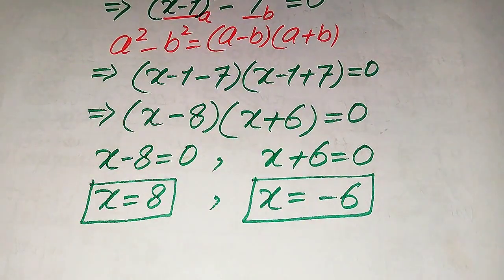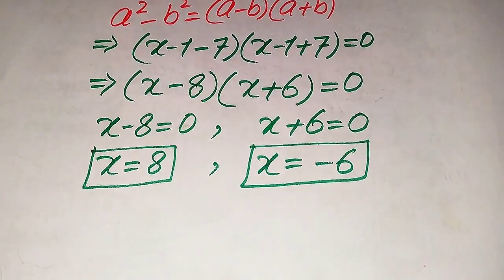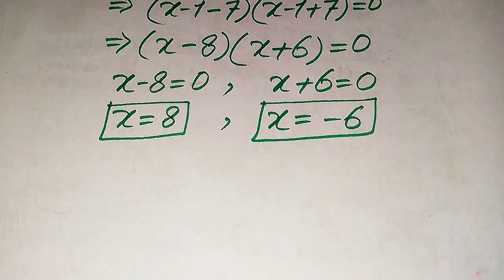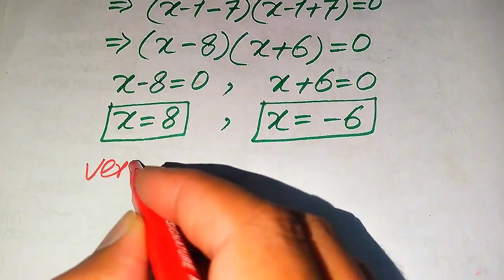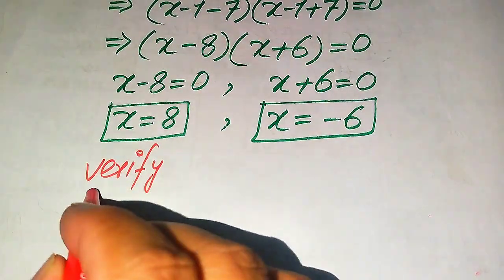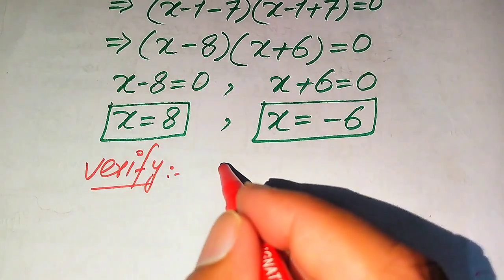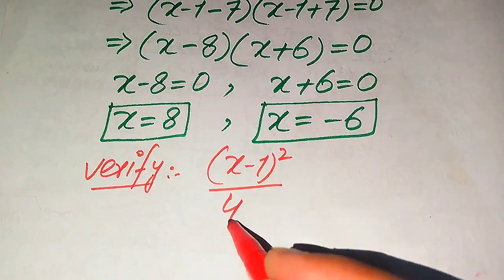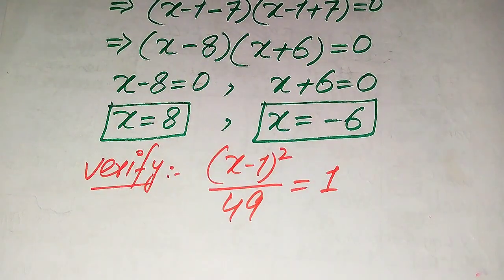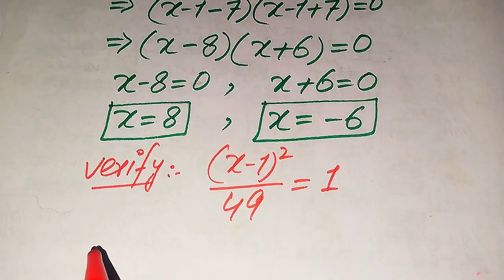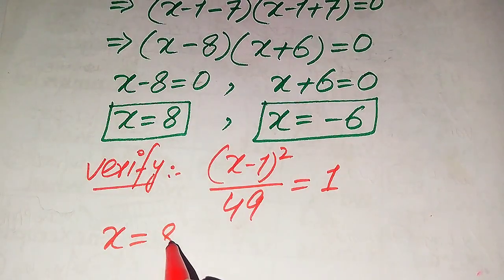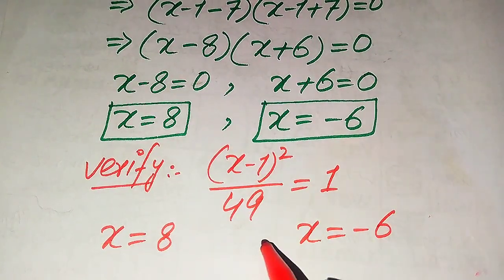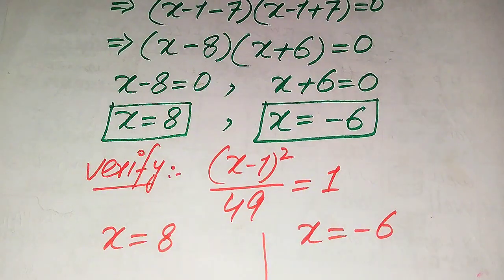These are the two values of x. In the next step we need to verify that both values satisfy the given equation. We copy down the given equation: (x minus 1) whole square divided by 49 equals 1. On this side we will verify x equals minus 6.